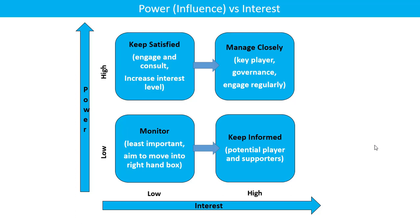In this slide we are going to study about the Power Interest Grid, also called the Power Interest Matrix. It has four quadrants. On the x-axis we have the interest level of the stakeholders, and on the y-axis we have the power of the stakeholders — how much they can influence a project, how much stake they have. Depending upon their stake and interest, they can be high or low.